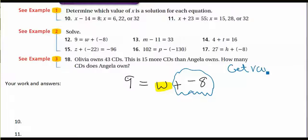So our goal, again, is to get the variable all by itself. So we want either W equals or equals W. We want the W by itself. So we need to get rid of that negative 8. So you think to yourself, well, how do I do that? What is the opposite of having the negative 8 with the W?